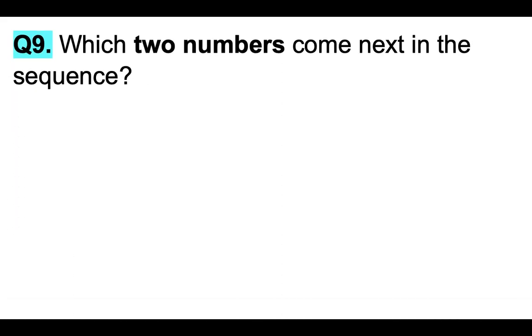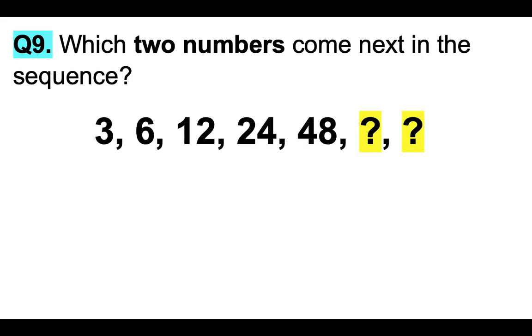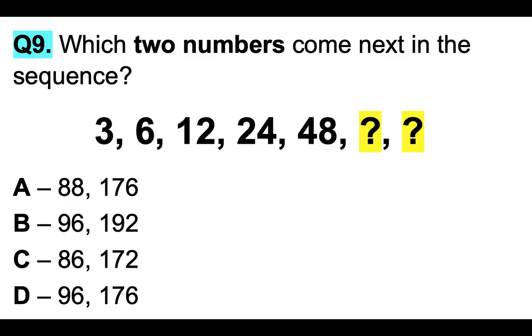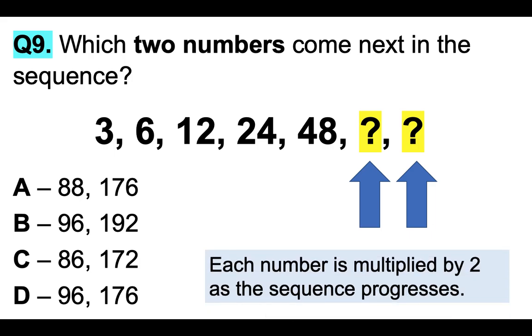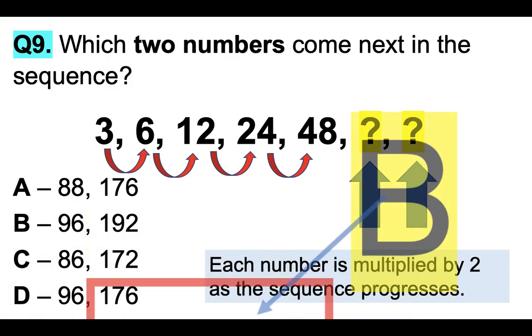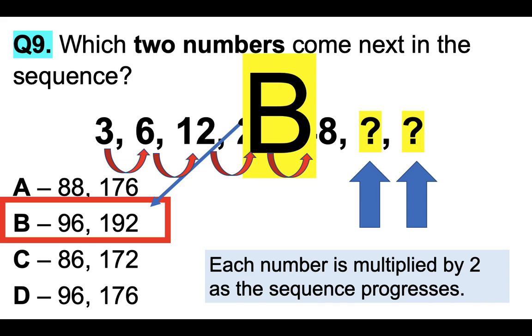Now we're going to get slightly harder. Which two numbers come next in the sequence: 3, 6, 12, 24, 48? Is it A) 88 and 176, B) 96 and 192, C) 86 and 172, or D) 96 and 176? The pattern is that each number is multiplied by 2 as the sequence progresses. 3×2=6, 6×2=12, 12×2=24, 24×2=48. So 48×2=96, and 96×2=192. The correct answer is B) 96 and 192.